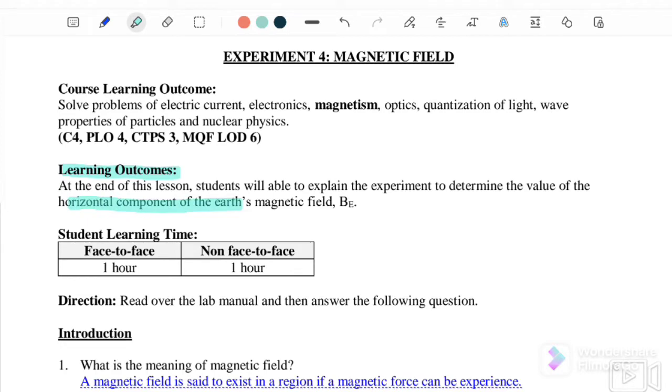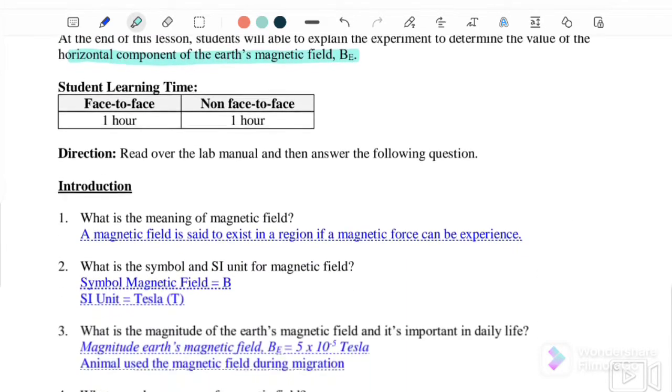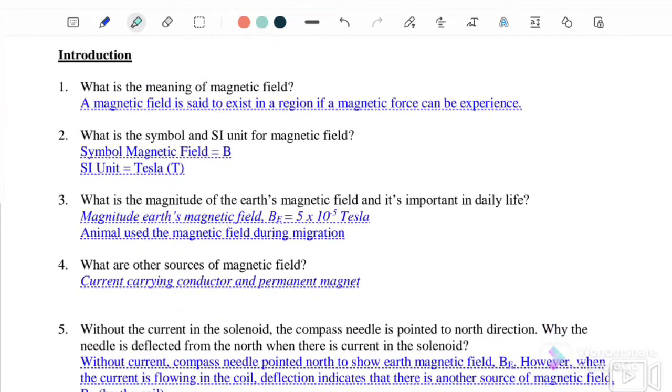Question number one: What is the meaning of magnetic field? A magnetic field is said to exist in a region if a magnetic force can be experienced. What is the symbol and SI unit of magnetic field? The symbol is B and the SI unit is Tesla.